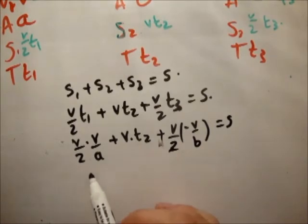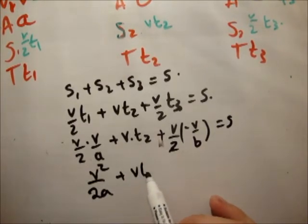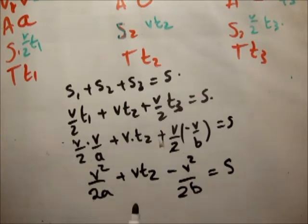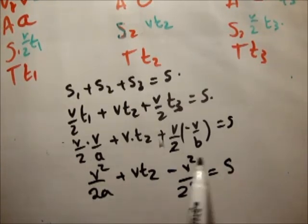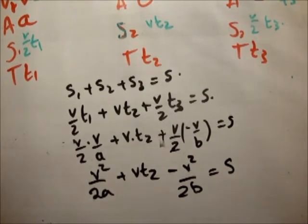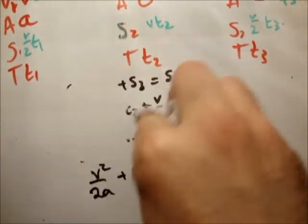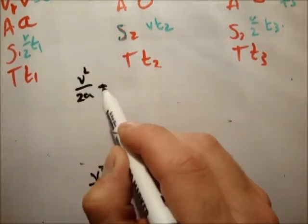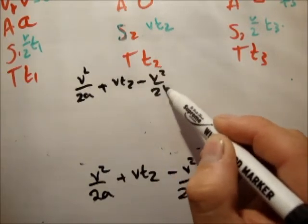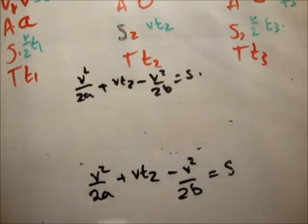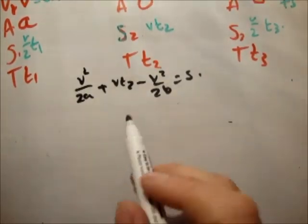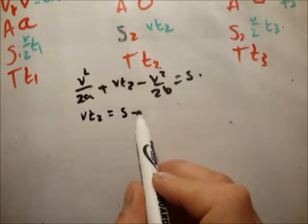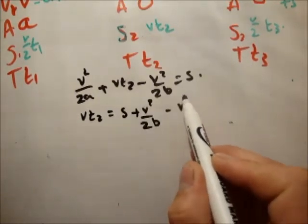We'll say that b is equal to minus v over T3. That is correct. Next we'll go for the distance. So S3 is equal to u plus v over 2 times T. So it's v plus 0 over 2 times T3. So that's v over 2 T3. Now we have all the information that we possibly can have. And what we need to do is manipulate those to give us what we're looking for.